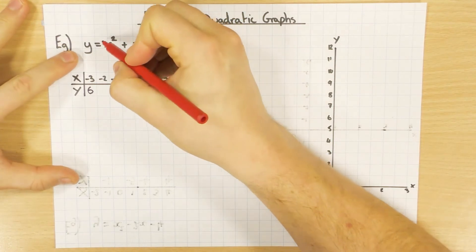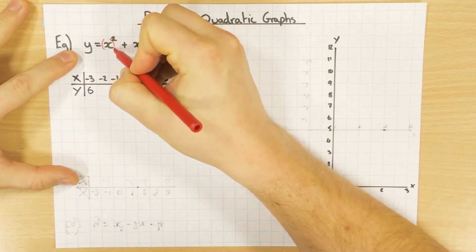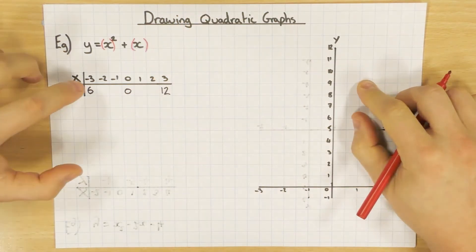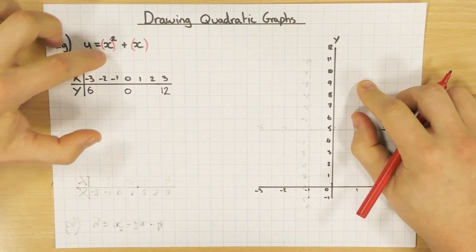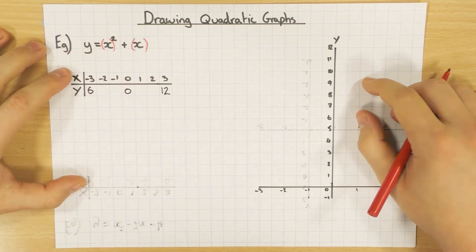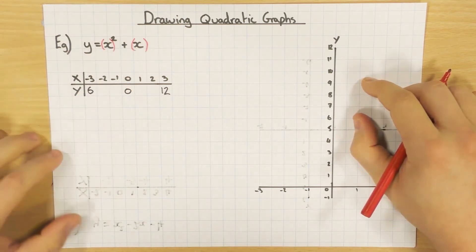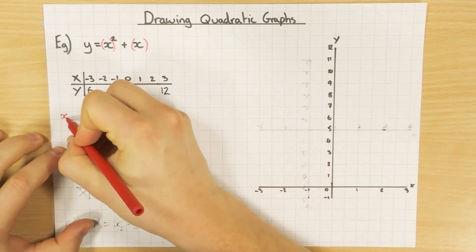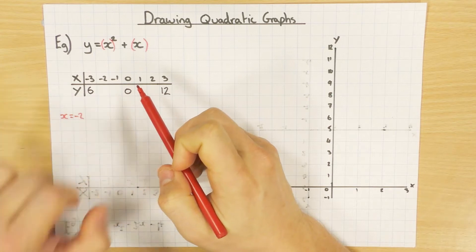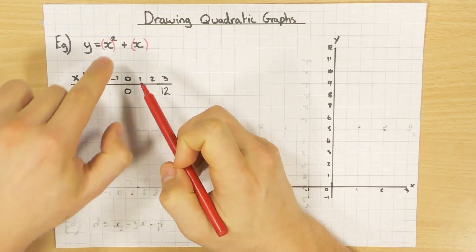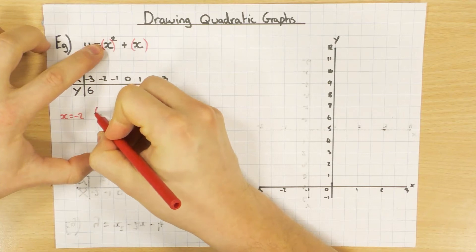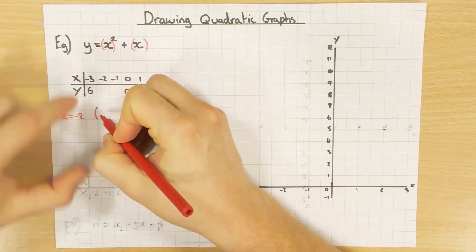The first thing I would do is put a bracket round each of the x's, because I'm going to substitute these values for x directly into these brackets. I'll show you why that's a good idea in a second when we have a go at the first one, which is x equals minus 2. So there's my x value — I want to work out what y is. I'm going to substitute minus 2 in for x.